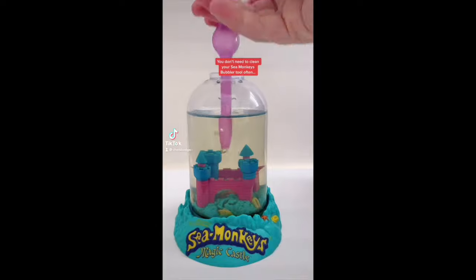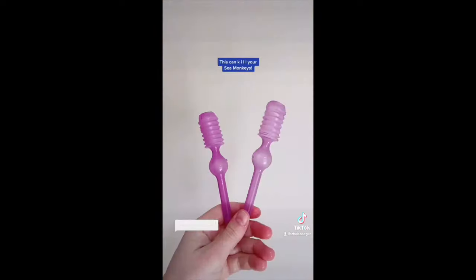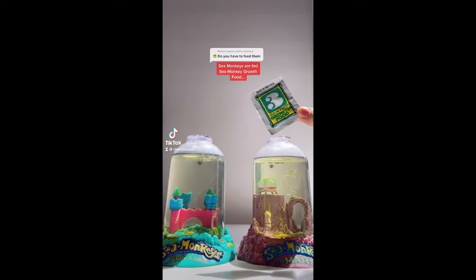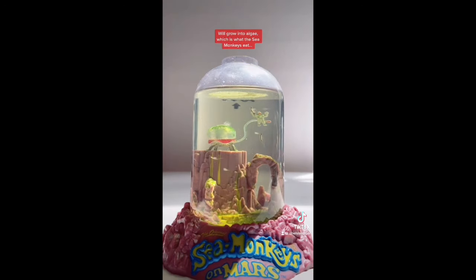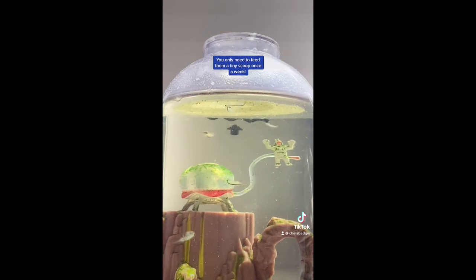You don't need to clean your sea monkeys bubbler tool often. However, if yours is getting grungy, just fill it with water and shake. Make sure you don't use soap as this can kill your sea monkeys. Sea monkeys are fed sea monkey grow food. This is a green powder that when added to water will grow into algae which is what the sea monkeys eat. You only need to feed them a tiny scoop once a week.